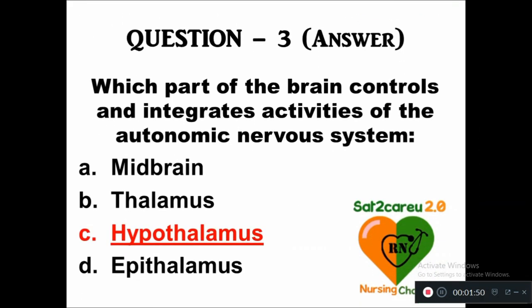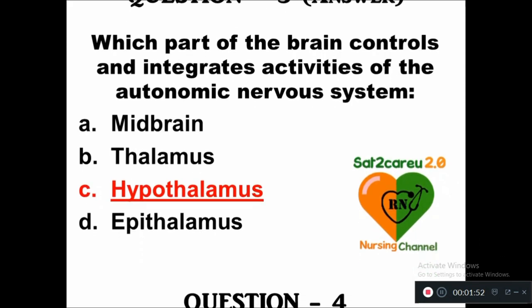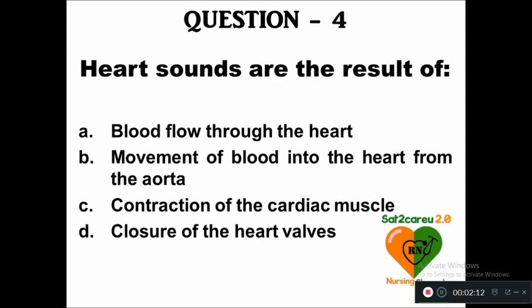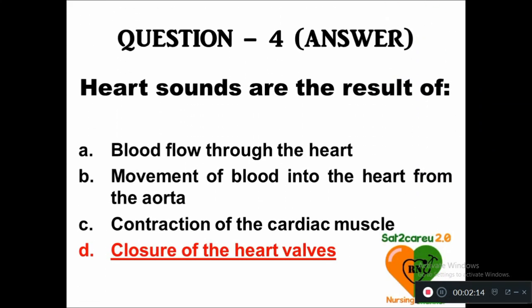The right answer is hypothalamus. Question 4: Heart sounds are the result of — option A: blood flow through the heart, B: movement of blood into the heart from the aorta, C: contraction of the cardiac muscles, D: closure of the heart valves. The right answer is closure of the heart valves.